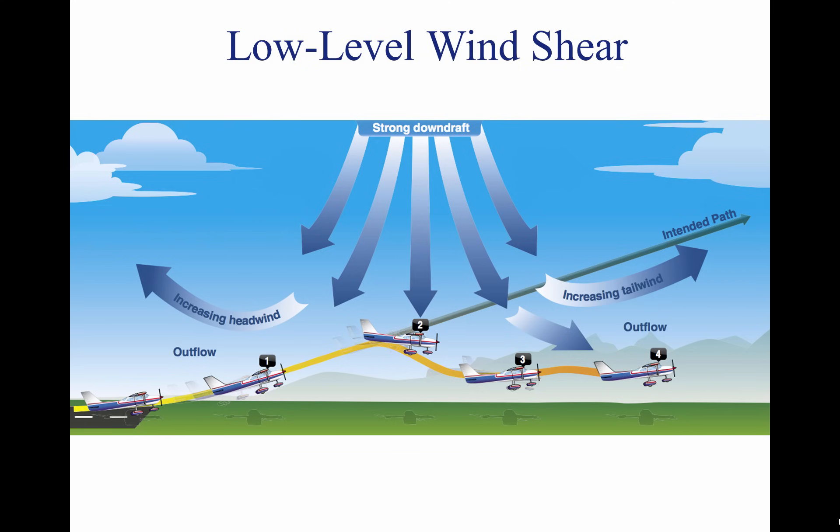Directional wind changes of 180 degrees and speed changes of 50 knots or more are associated with low-level wind shear. Low-level wind shear is commonly associated with passing frontal systems, thunderstorms, and temperature inversions with strong upper-level winds greater than 25 knots.